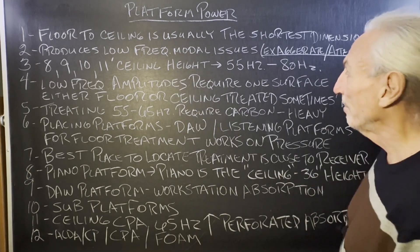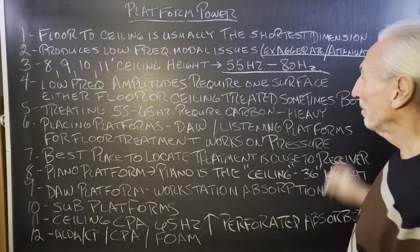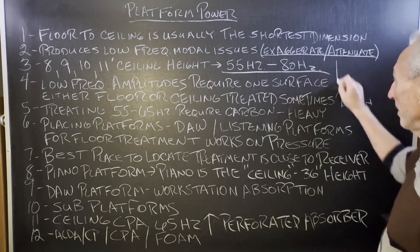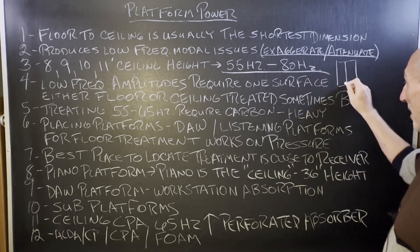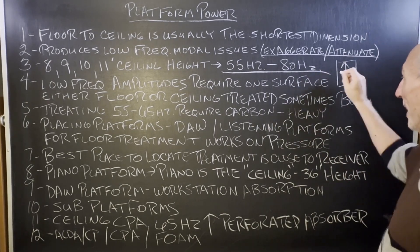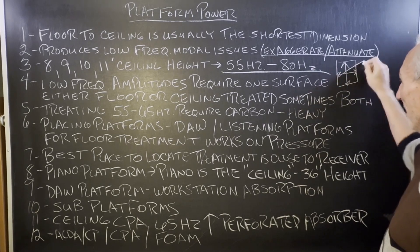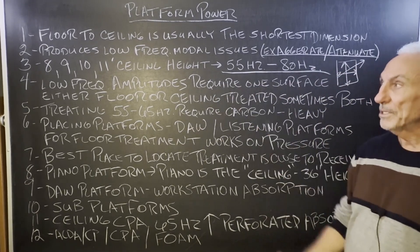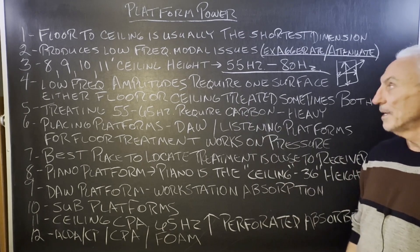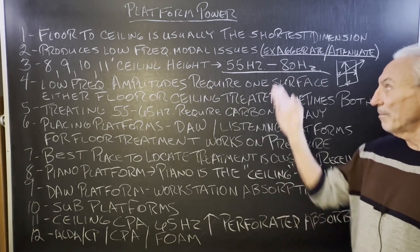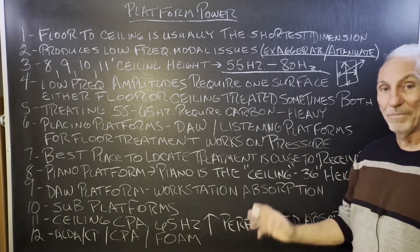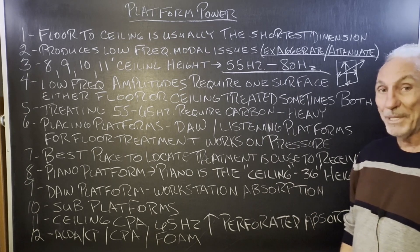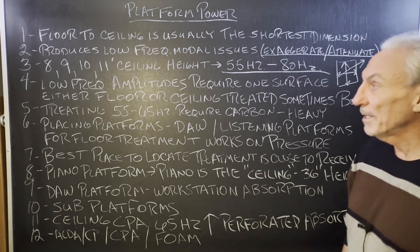Our 8, 9, 10, and 11-foot ceiling heights produce 55 to 80 cycle problems floor to ceiling. Remember, we have three sound fields. So this is the frequency range that those heights create problems. I had one the other day — it was at 65 Hz — and the client just couldn't hear anything from 65 to 80. He was a mix engineer, so it was really critical, and we had to help him with that.